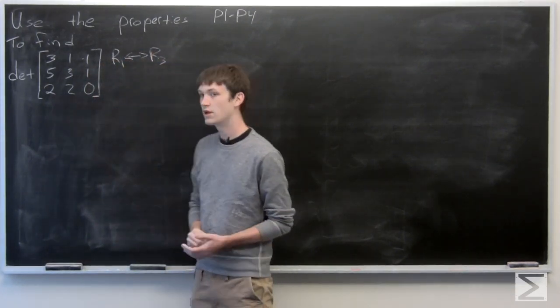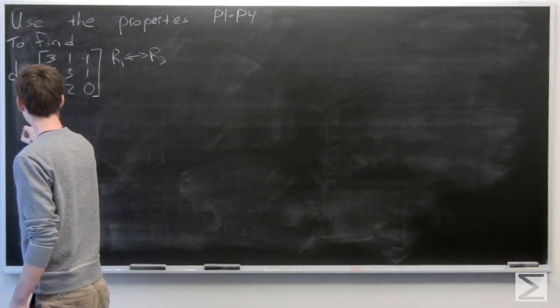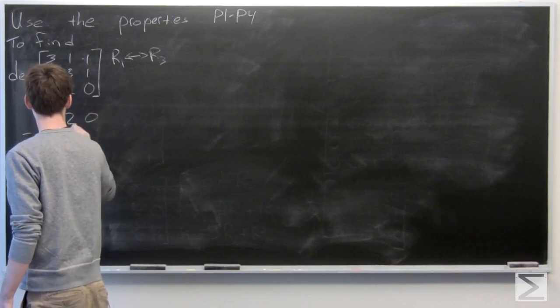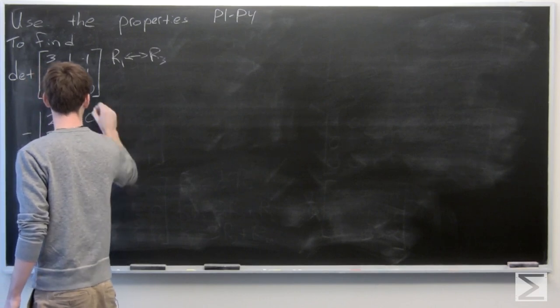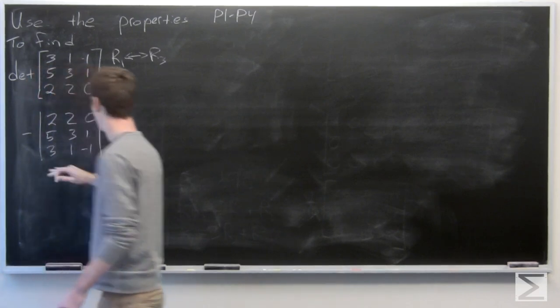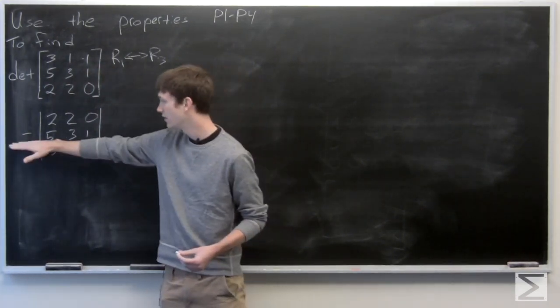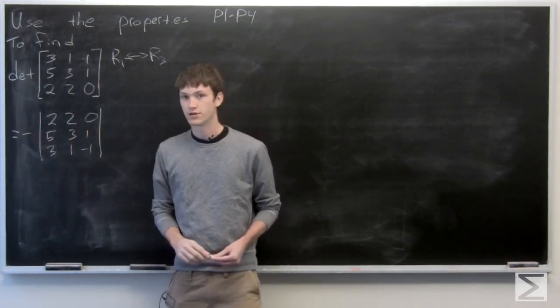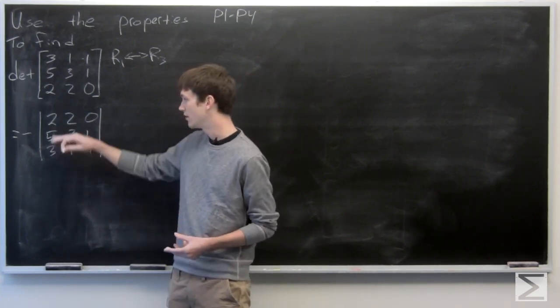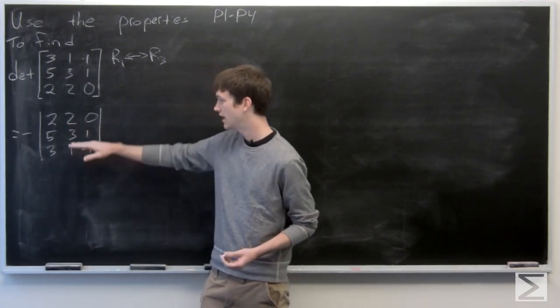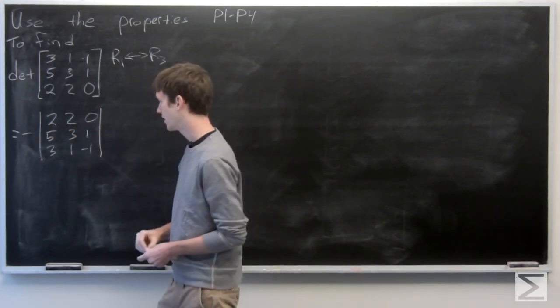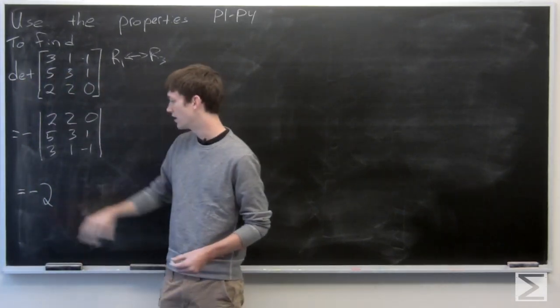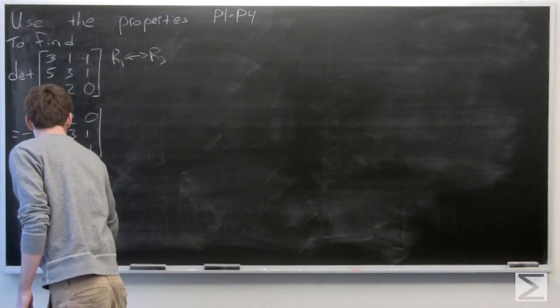So if we do that, then we know that our determinant is negated. So we have our negative sign up front. And then we'll go ahead and factor a 2 out. So our property tells us that when we scale a row, we can just pull that value out. So we have negative 2 times 1, 1, 0.